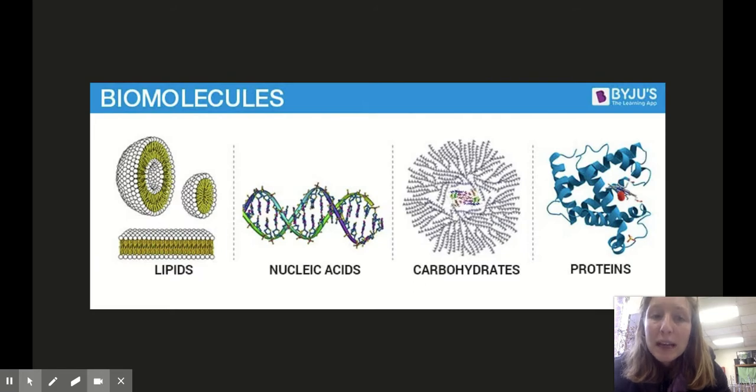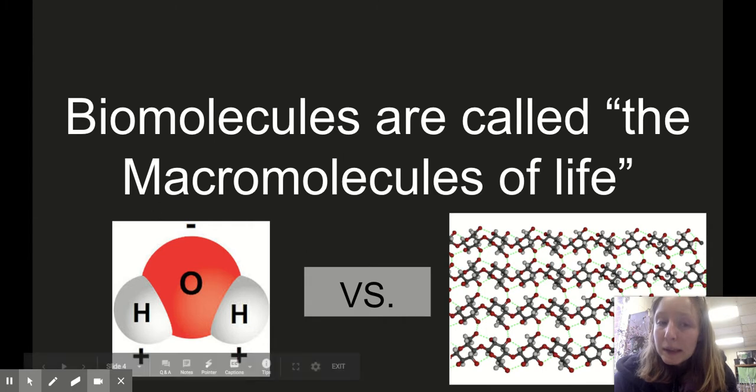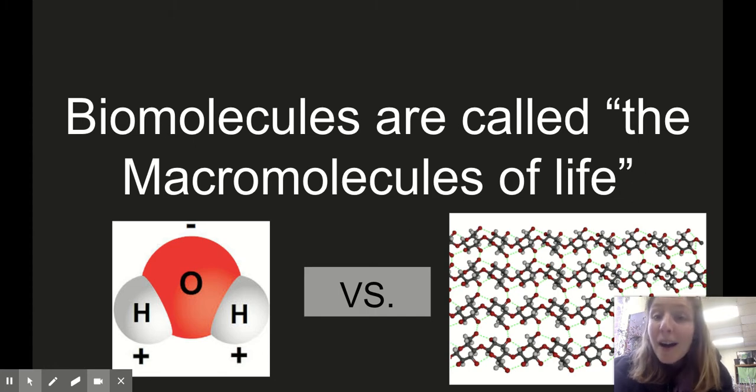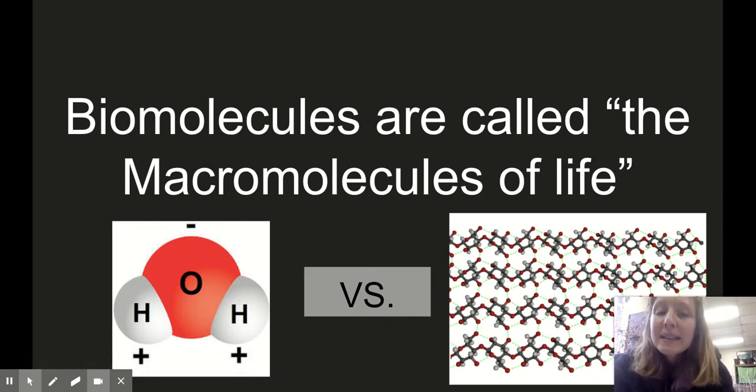We got four types of biomolecules here. Remember that biomolecules are called the macromolecules of life. If we look at a water molecule, H2O, we got three atoms, a tiny little molecule. If you look at a complex carbohydrate, you're going to have hundreds, maybe even thousands of little atoms in that molecule. So that means that they are macro, large. Micro is your root for small, macro means large.